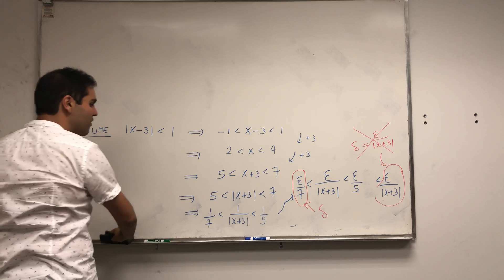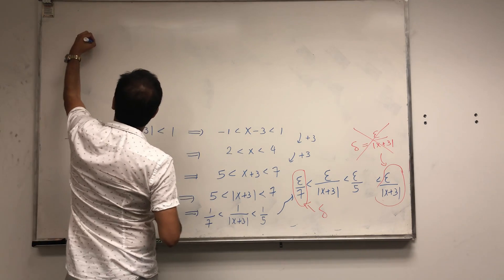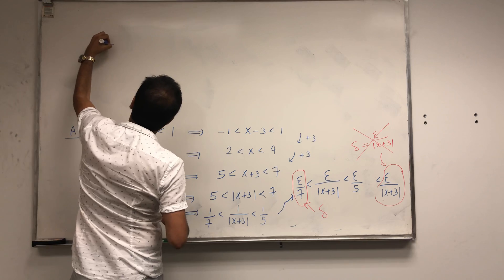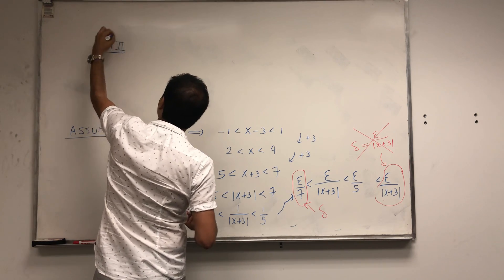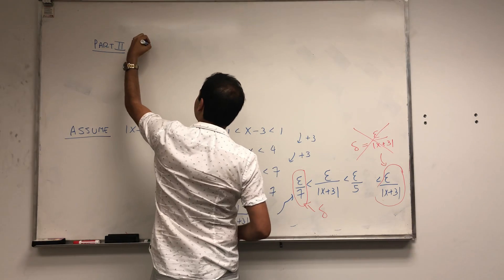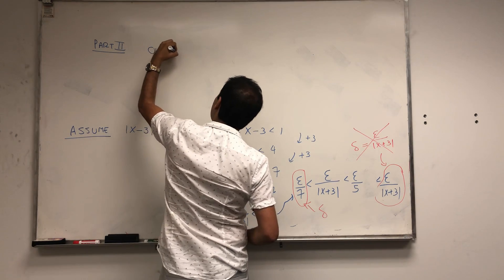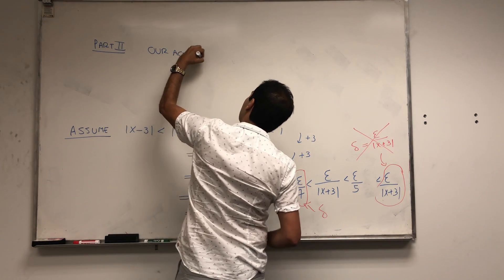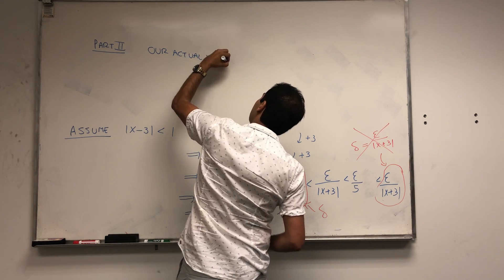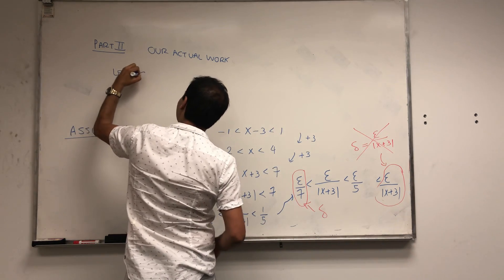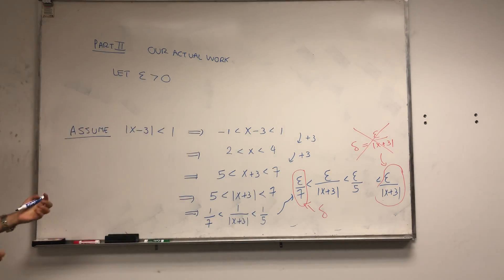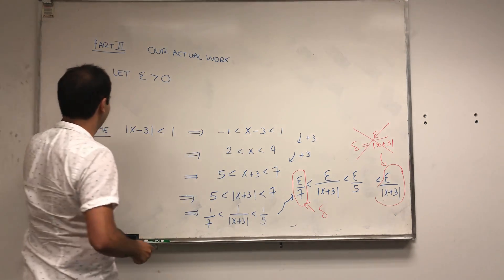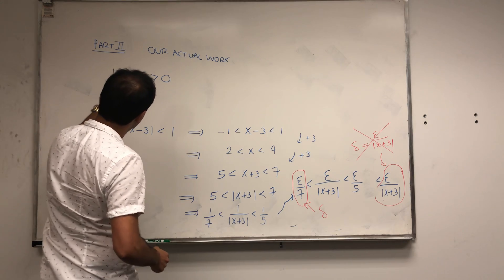So now we can write our proof. Part 2, our actual work. As before, let epsilon be greater than 0. It's like our abracadabra.